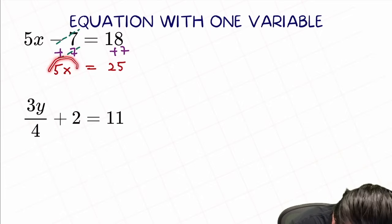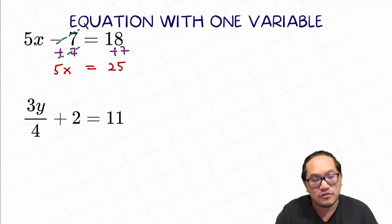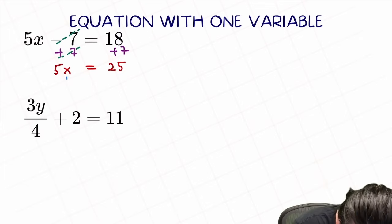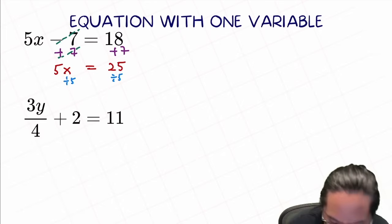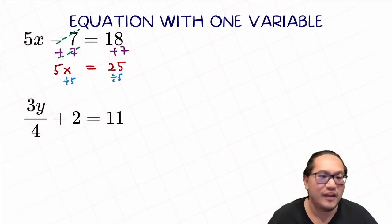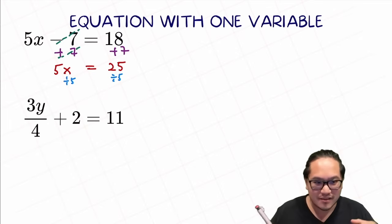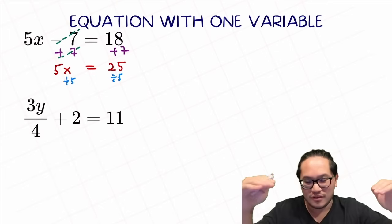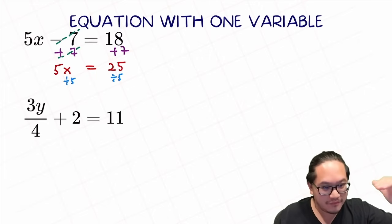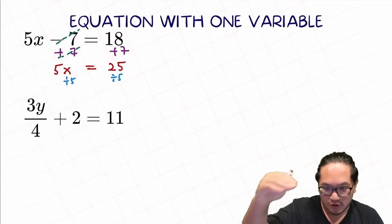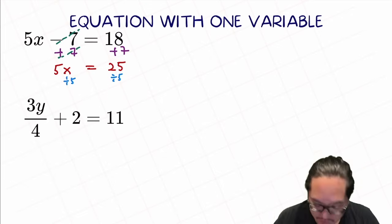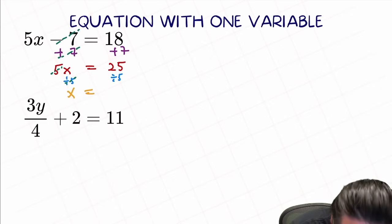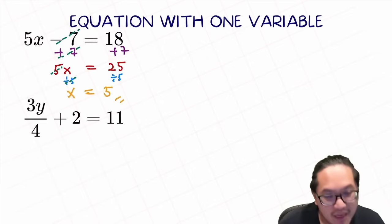Now the next step: we need to isolate x. Since 5 is multiplied with x, we need to do the exactly opposite. Since this is multiplied by 5, we need to divide by 5 on both sides. Remember, in any kind of equation — whether it's a chemical equation or math equation — as long as there is an equal sign, you want to balance them out. Whatever you do on the left, you need to do it on the right. This divided by 5 will cancel the 5 out, and we're left with x. And 25 divided by 5 is just equal to 5.